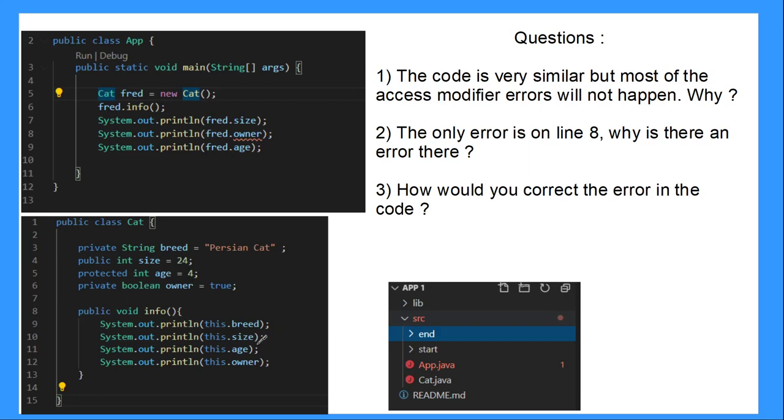And so we are getting the information from here. The access modifier for size is public. The access modifier for age is protected. And this will both allow us to access this property from outside the class. So that is okay. The only one left is on line eight in the first section, owner. And why is there an error here? There's an error here because still that access modifier is private. So if you change that access modifier, then it will allow us to directly get that information.